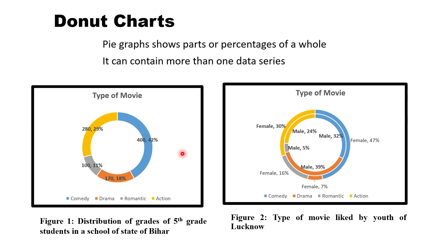Next is donut charts. A donut chart, like a pie chart, shows partial percentages of a whole, but it can contain more than one data series, which overcomes the limitation of pie charts. Here we can compare two series together — for example, the type of movie liked by youth of Lucknow, where we have two series: male and female — and we can compare the percentages for all four categories.